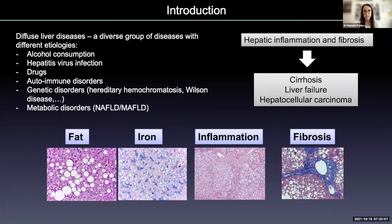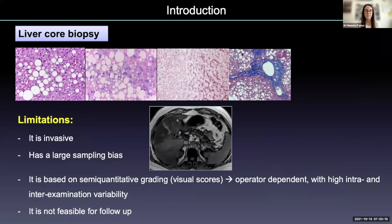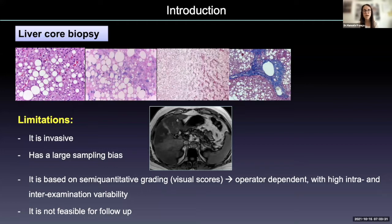Regardless of the etiology, fat, iron, inflammation, and fibrosis are common histological features that are relevant not only for the diagnosis, but also for the prognosis and treatment monitoring of these patients. Classically, steatosis, iron, inflammation, and fibrosis were assessed by liver biopsy. Nevertheless, liver biopsy is limited by important sampling bias and subjectivity in the interpretation, apart from a small but real risk of complications because it is an invasive procedure.